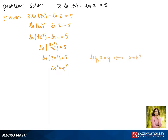Now to solve for x, we'll divide both sides by 2. This gives us x squared equals e to the fifth over 2. Taking the square root of both sides gives us x equals plus or minus the square root of e to the fifth over 2.